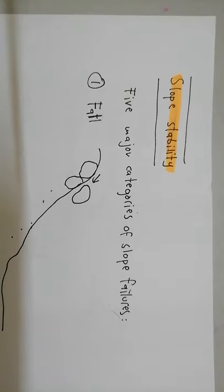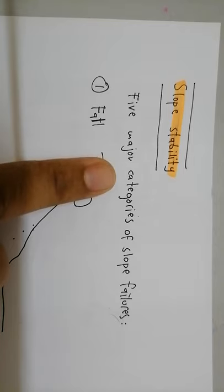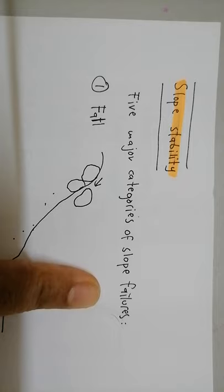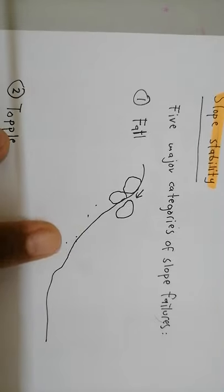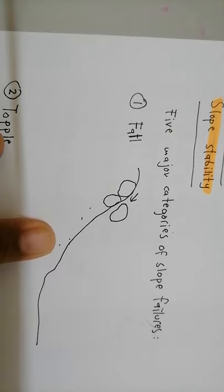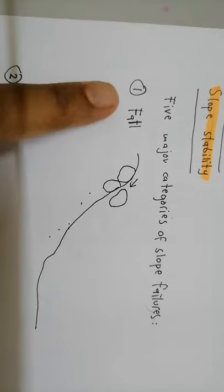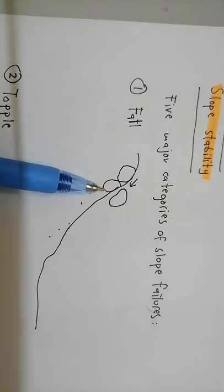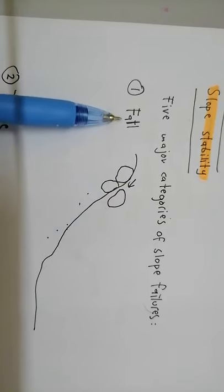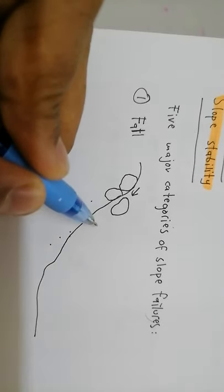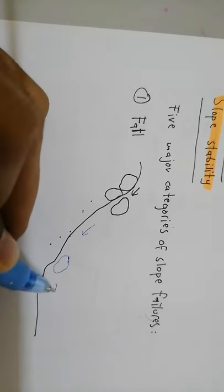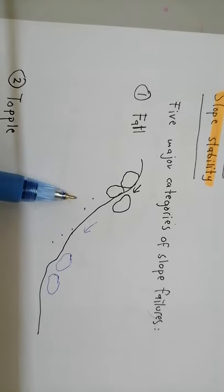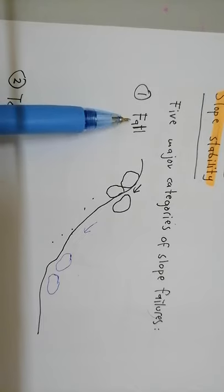Let's start with discussing the five major categories of slope failure — kegagalan cerun. Ada lima major category. Yang pertama is fall. In fall, kalau kita tengok batuan dekat cerun, is falling down basically. Batuan ni akan jatuh ke bawah. Kegagalan cerun ni kita namakan sebagai fall.